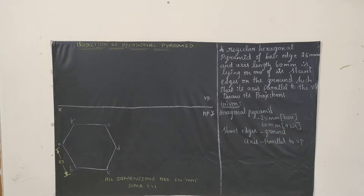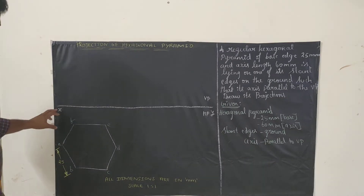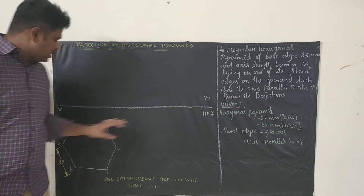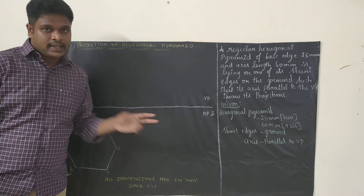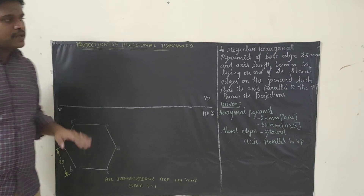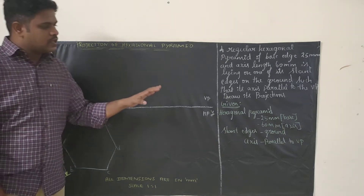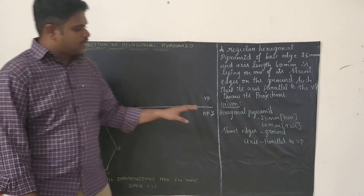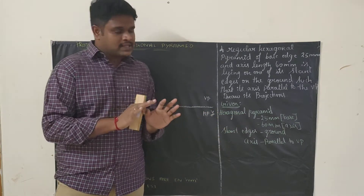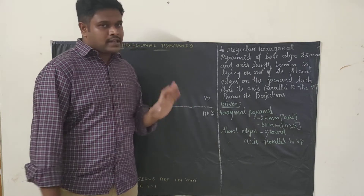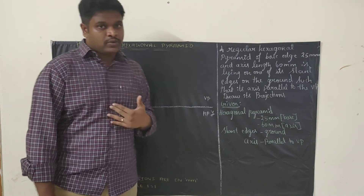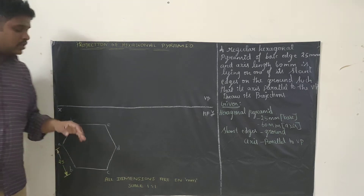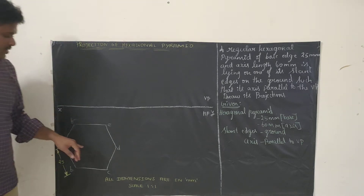The first step is to draw a reference line. Write XY, VP, and HP. The second step is to draw the base diagram. In our case the base diagram will be a hexagon. I will explain which type of hexagon we need to take — go with the second type of hexagon.